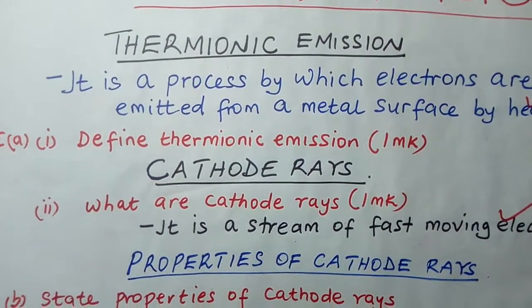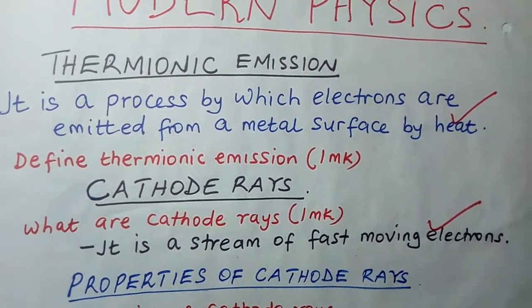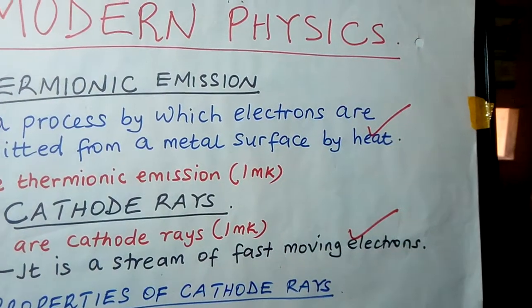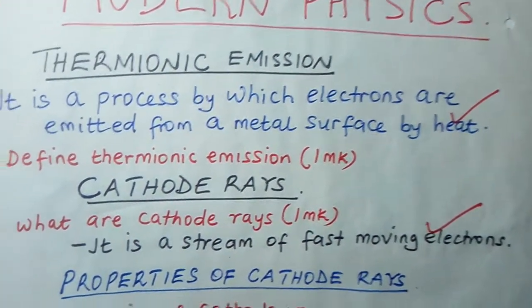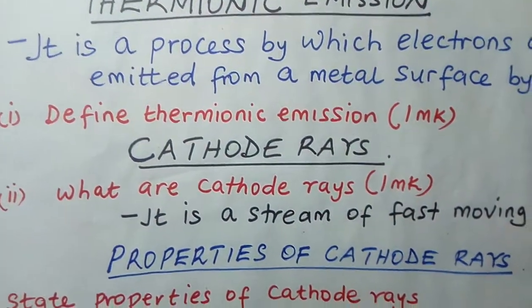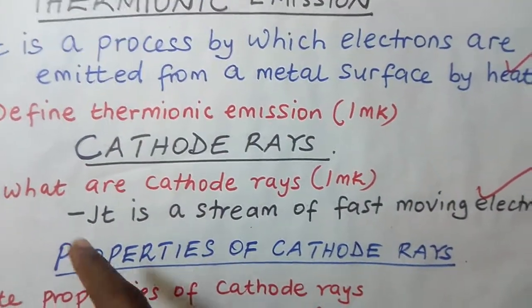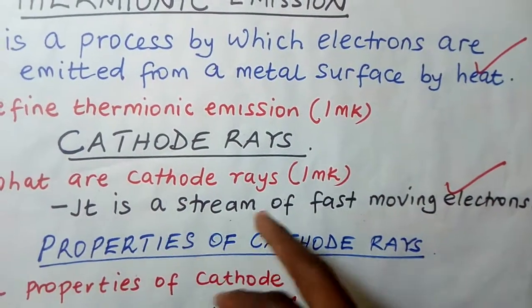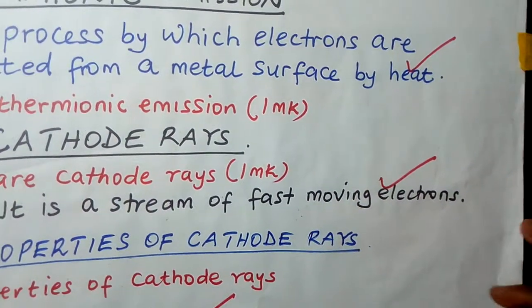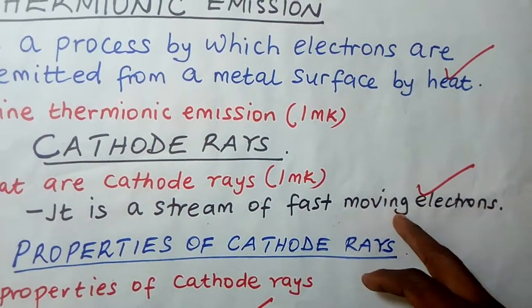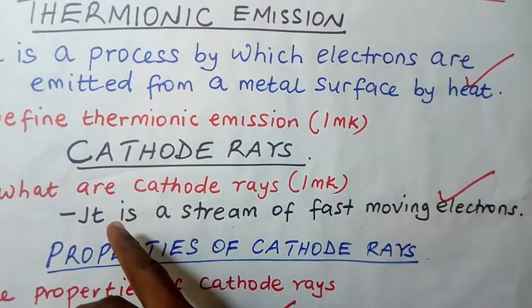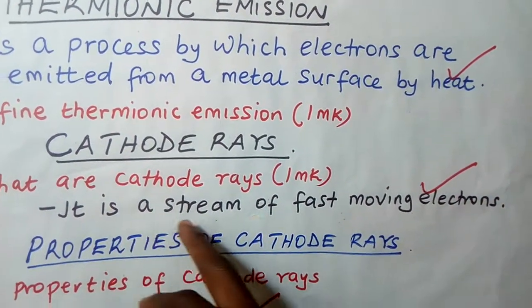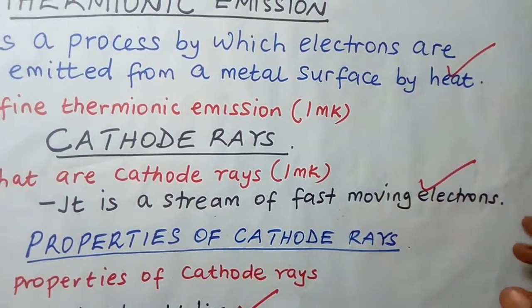Now let's go to another word: cathode rays. Cathode rays simply mean electrons, but these electrons should be moving at a very high speed. So electrons which are moving at a very high speed, we call them cathode rays. So when somebody says define cathode rays, you say it is a stream of fast-moving electrons, or you can say it is a stream of electrons moving at a high speed.